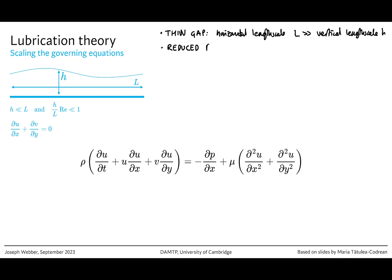There are some analogues between this and Stokes flow. In Stokes flow, one of the assumptions is that the Reynolds number is very, very small. We don't need such a strong assumption for lubrication theory to hold. The reduced Reynolds number — which is just H over L times the Reynolds number — needs to be very small. This is a weaker assumption than Stokes flow, so we can have fluids with an intermediate Reynolds number but a very thin gap and still apply lubrication theory.